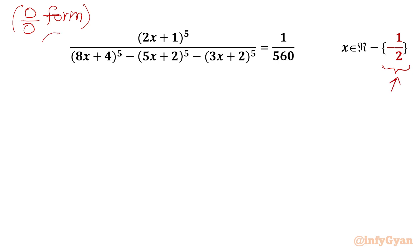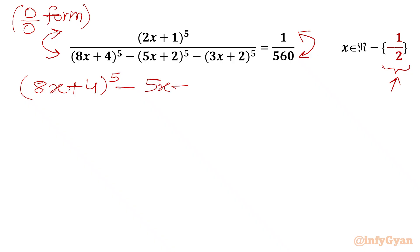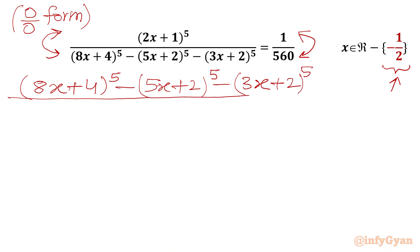Now I will switch numerator and denominator — let us consider taking the reciprocal of both sides. I will write our equation: (8x+4)^5 minus (5x+2)^5 minus (3x+2)^5 in the numerator, and (2x+1)^5 in the denominator.